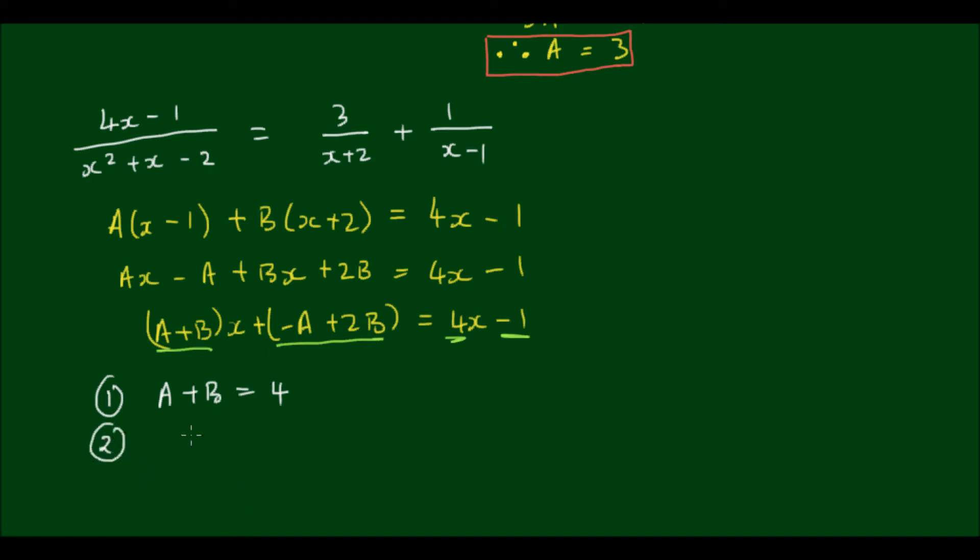And let equation 2 equal to negative A plus 2B is equal to negative 1. And what I then can do is to solve these equations simultaneously.